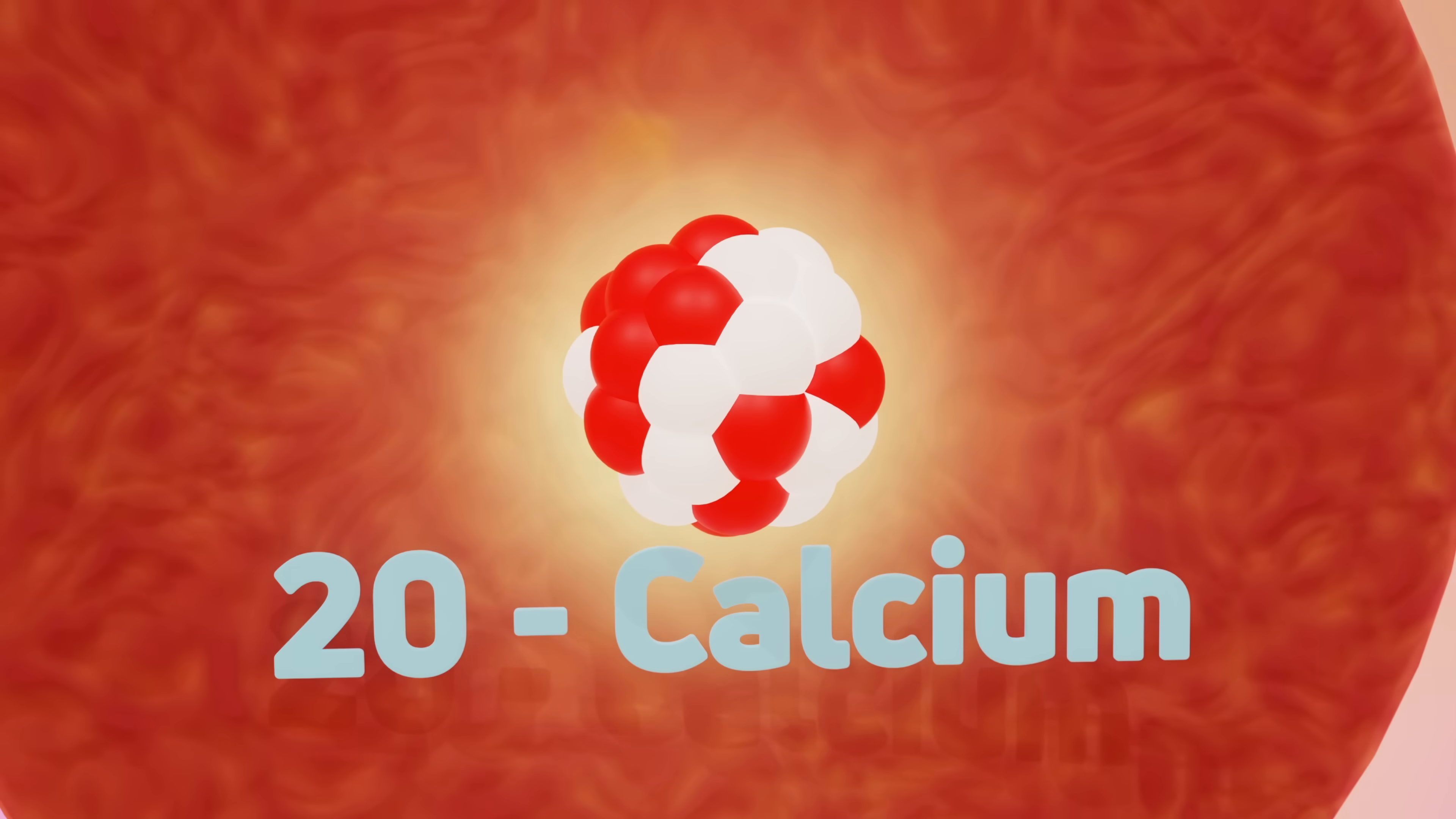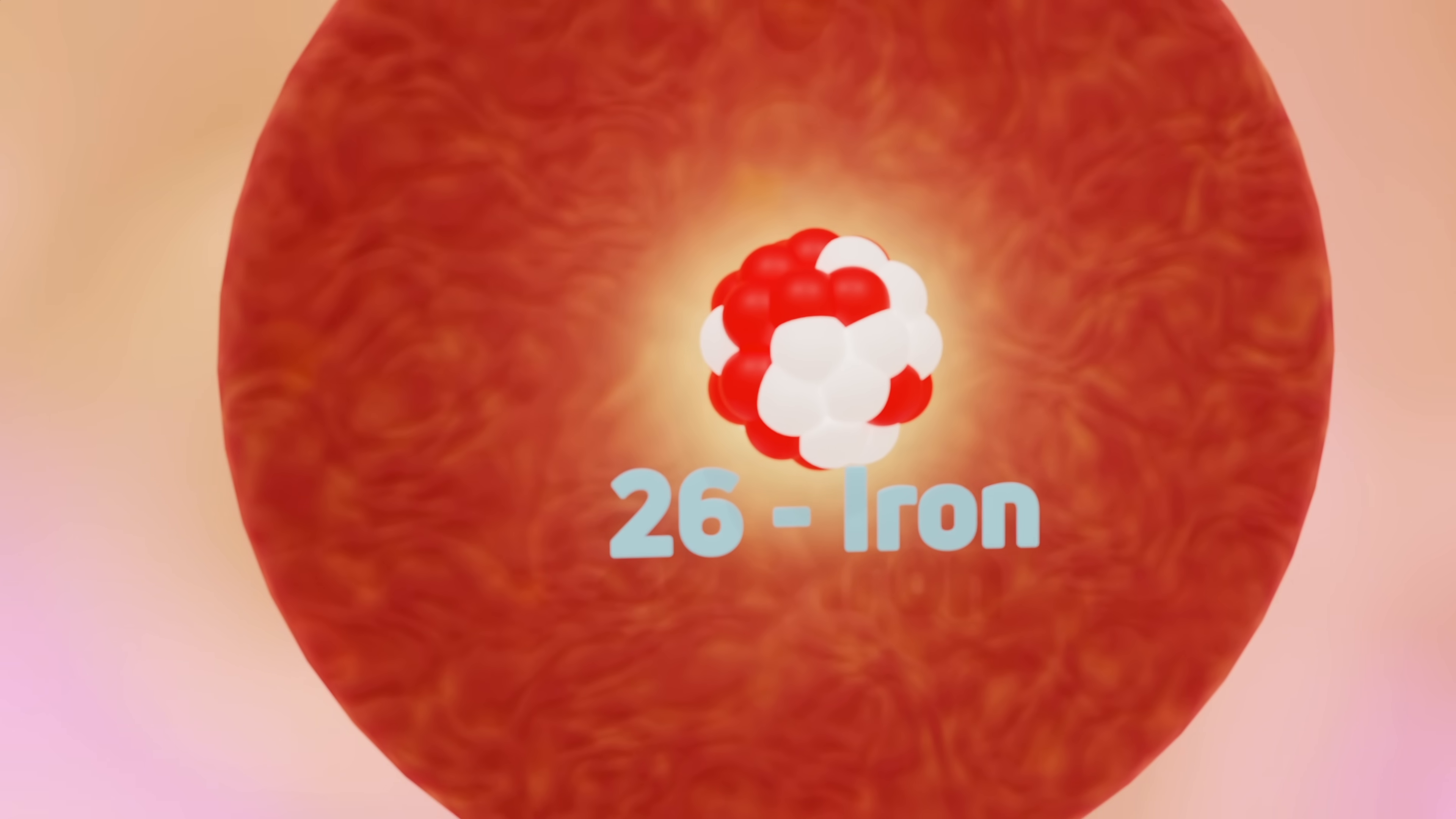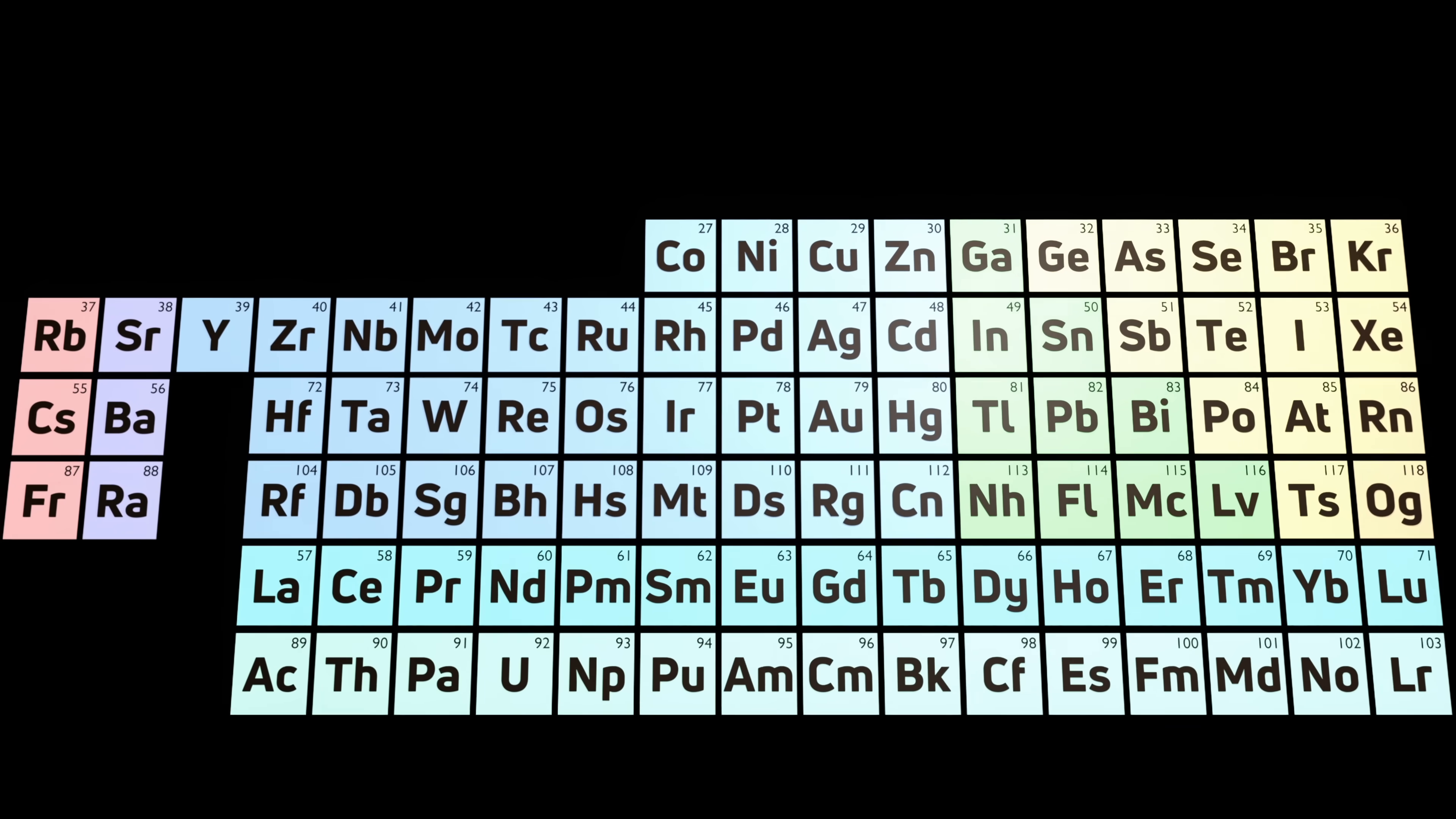But this fusion can only squeeze about 26 protons together in a nucleus, producing iron. When we look at a periodic table, this is but a small portion of all the elements in existence. What happened?